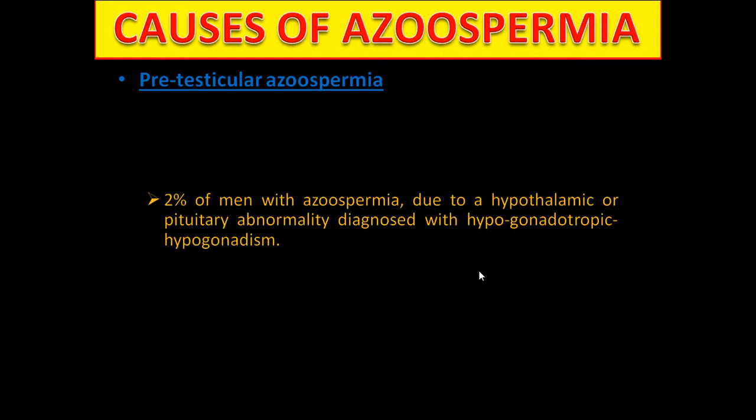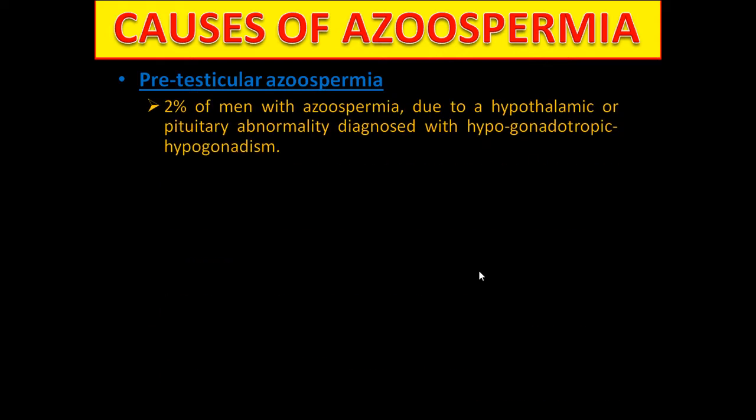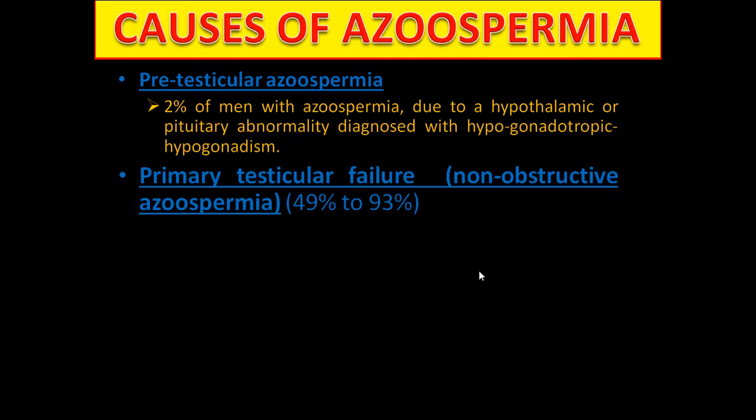Causes of azoospermia. Pre-testicular azoospermia accounts for 2% of men with azoospermia, due to a hypothalamic or pituitary abnormality diagnosed as hypogonadotropic hypogonadism, leading to primary testicular failure and non-obstructive azoospermia.